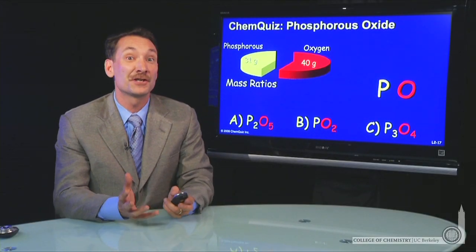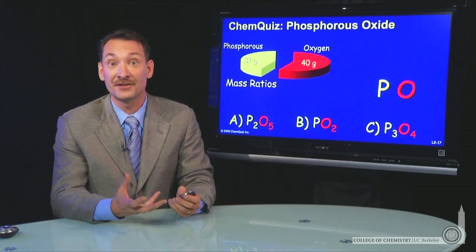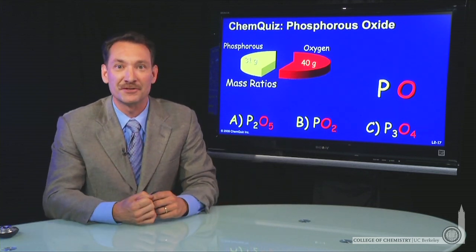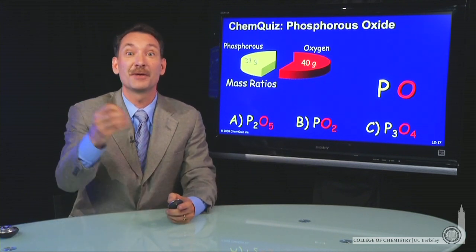When the phosphorus and oxygen react to form the phosphorus oxide, 31 grams of phosphorus in excess oxygen produced 71 grams of the phosphorus oxide. So that difference of 40 grams must have been the oxygen.